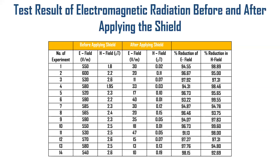An electromagnetic radiation tester is used for testing. The radiation level was measured before applying the radiation protective textile, and then measured again after applying it to obtain comparative results. The results show that after applying the electromagnetic radiation shield, radiation can be reduced to a great extent.